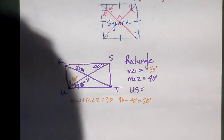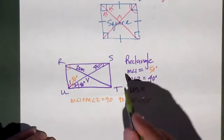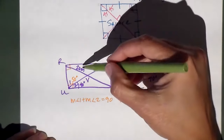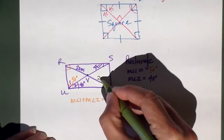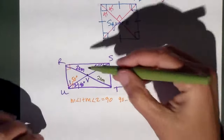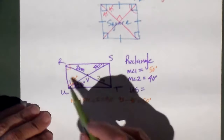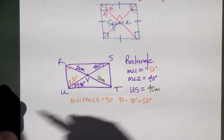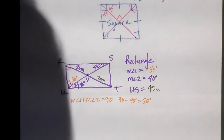How do I find US? US is a diagonal. Since it's a rectangle, the diagonals are congruent. If RV is 20 meters, that means the other half is also 20 meters because they bisect each other, so RT equals 40 meters. Therefore US also equals 40 meters, because the diagonals are congruent. And that's how you apply the properties of a rectangle.